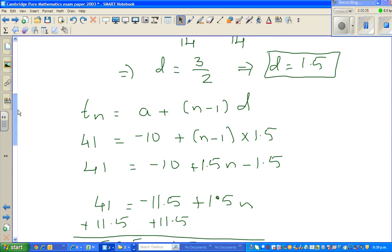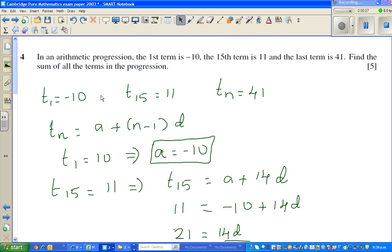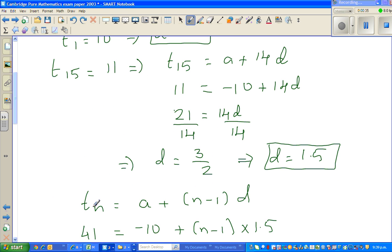In the previous video, we found the value of a, which was negative 10. Let me read the question. In an arithmetic progression, the first term is negative 10, the 15th term is 11, and the last term is 41. Find the sum of all the terms in the progression. So we saw how we got a is negative 10, which is the first term, and then I give you this formula.